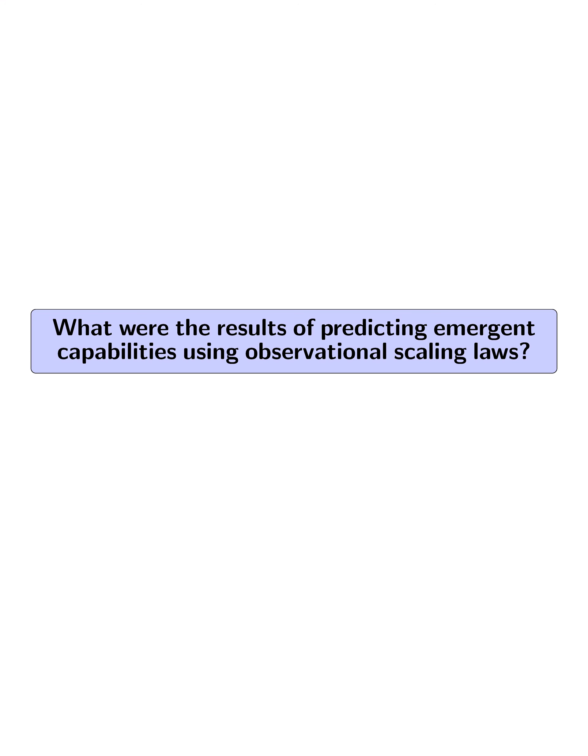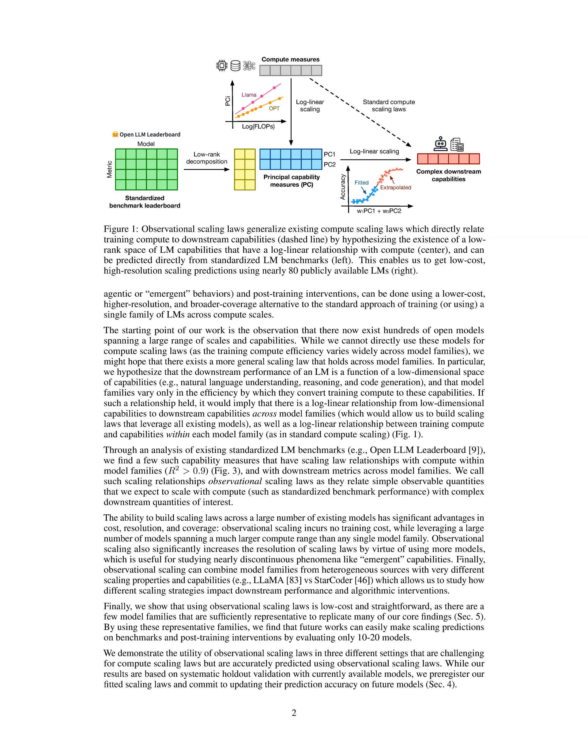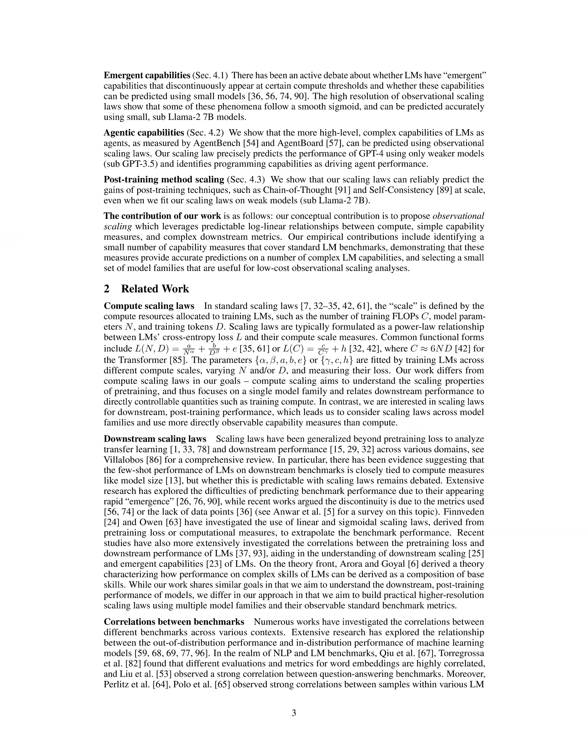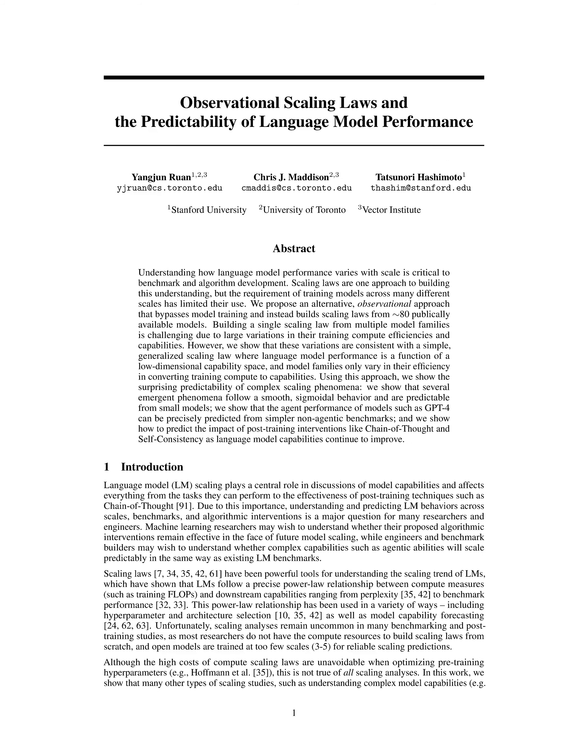What were the results of predicting emergent capabilities using observational scaling laws? The results showed that some emergent phenomena follow a smooth sigmoidal curve, which can be accurately predicted using small sub-LLaMA-27B models. The higher resolution of observational scaling laws allowed for clear visualization of smooth sigmoidal curves in phenomena previously identified as emergent. Surprisingly, transition points where models shift from near-random to high performance could often be accurately forecasted using models with slightly above-random performance.